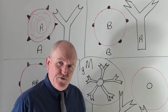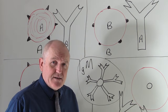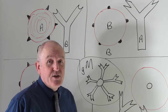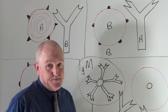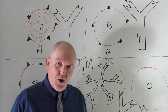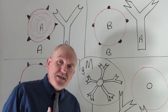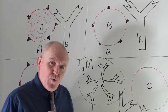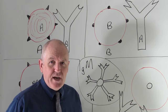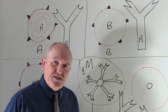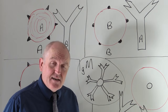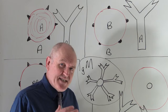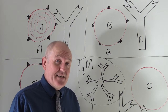The next blood group I want to introduce is the Rhesus factor. The Rhesus factor is so-called because it was discovered using Rhesus monkeys. It is actually a complicated factor with many subgroupings, like C, D, and E. But the one that is immunologically active — that can act as an antigen — is the D factor. So when we're talking about the Rhesus factor, really what we're talking about is the D factor.